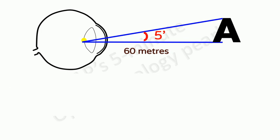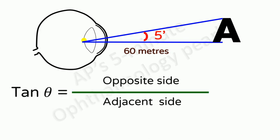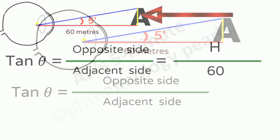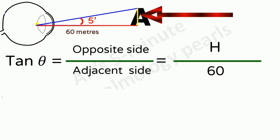We know from trigonometry that tan theta, in this case tan of 5 minutes is opposite side by adjacent side. Opposite side is the height of the letter, so let us call this H. Adjacent side is the distance at which that letter subtends an angle of 5 minutes. So, for the top letter it is 60 meters.